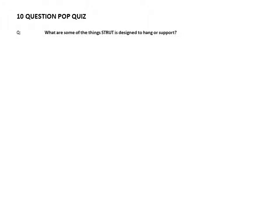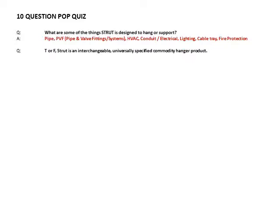Ten-question pop quiz. What are some of the things strut is designed to hang or support? Pipe, pipe and valve fitting systems, HVAC, conduit electrical, lighting, cable tray, fire protection. True or false: strut is an interchangeable, universally specified commodity hanger product. True.